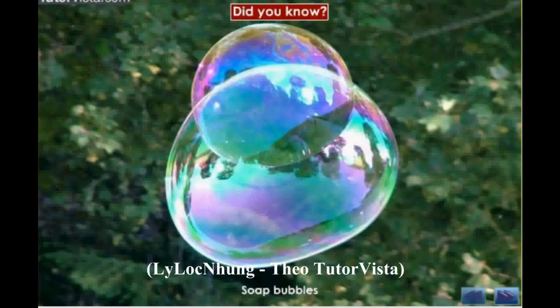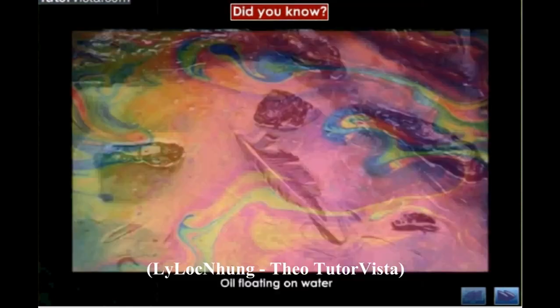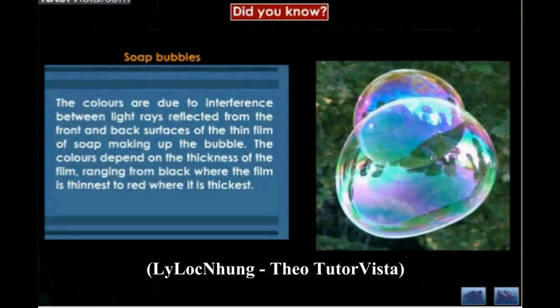The colours in soap bubbles, the brilliant colours of the peacock feathers, and the colours you observe when white light is incident on a thin film of oil floating on water, are due to interference of light. The colours are due to the interference between light rays reflected from the front and back surfaces of the thin film of soap making up the bubble.